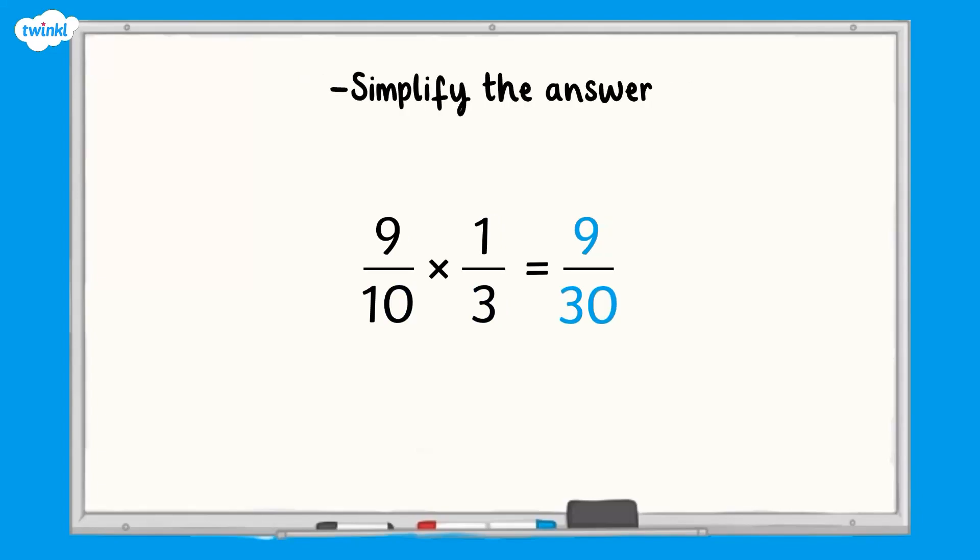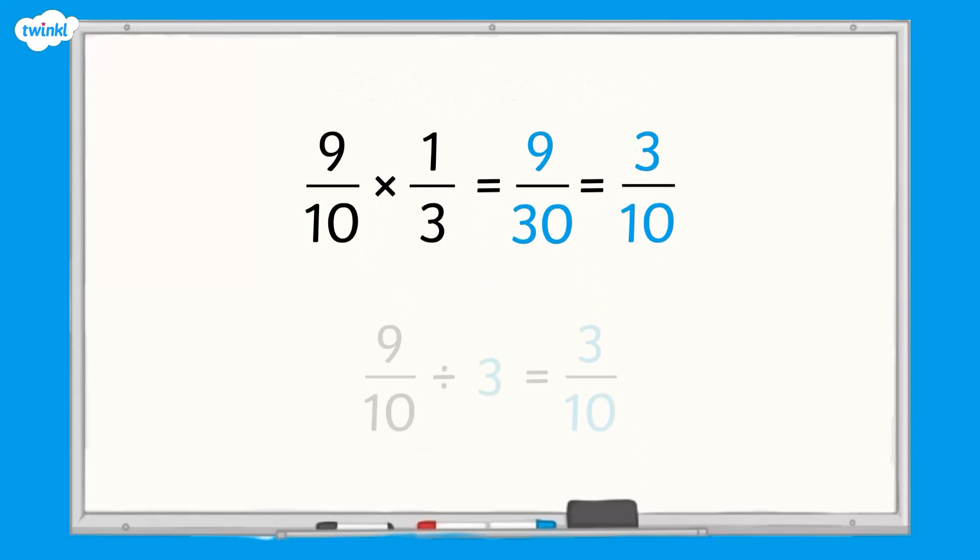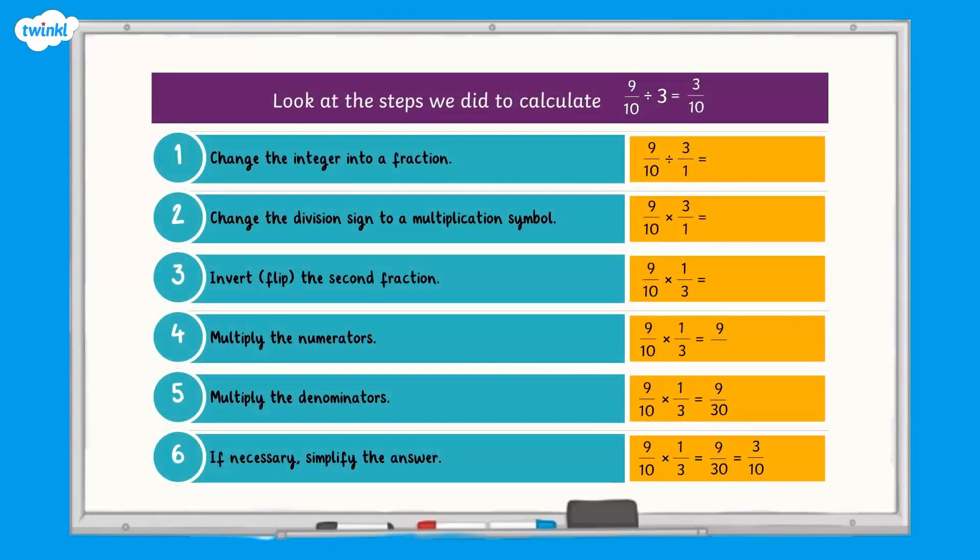Finally, if needed, we simplify the fraction answer. 9 thirtieths is equivalent to 3 tenths. So 9 tenths divided by 3 equals 3 tenths. Here's a reminder of each step. Pause now if you want to have another look through it.